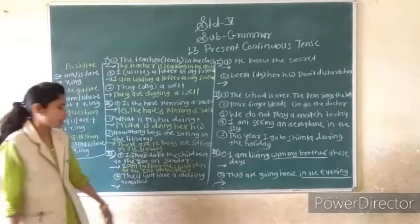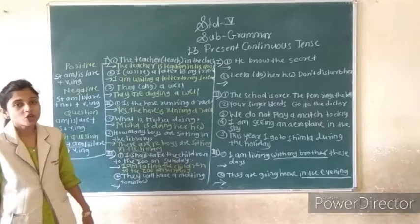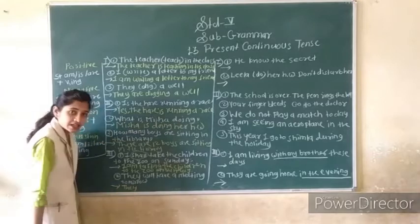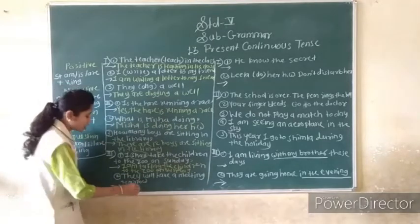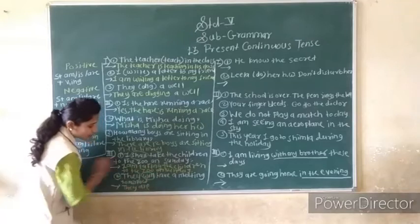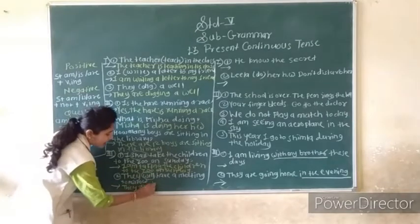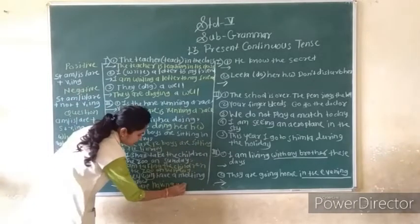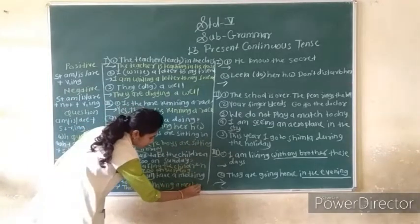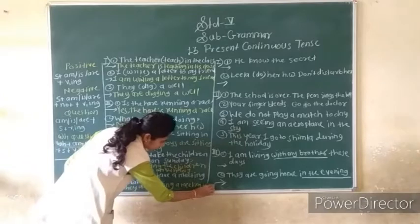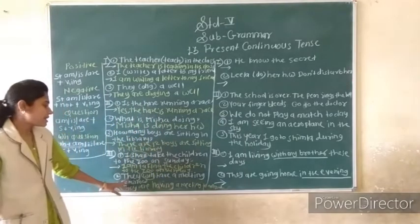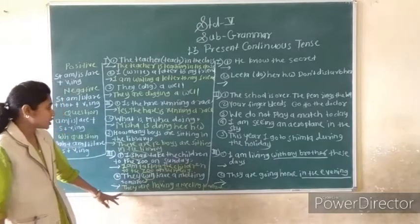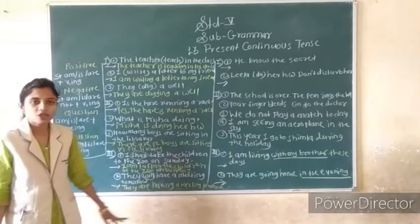They will have a meeting tomorrow. Remove 'will', after 'they' use 'are', change 'have' to 'having'. Answer: They are having a meeting tomorrow. Do you understand? After the subject, you use is/am/are, then the verb+ing form.